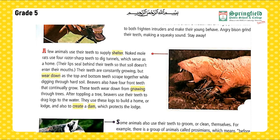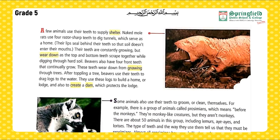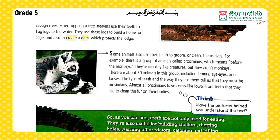Beavers also have four front teeth that continually grow. These teeth wear down from gnawing through trees. After toppling a tree, beavers use their teeth to drag logs to the water. They use these logs to build a home or lodge, and also to create a dam which protects the lodge. Some animals also use their teeth to groom or clean themselves.